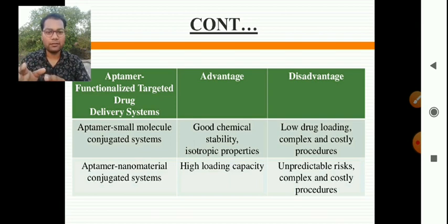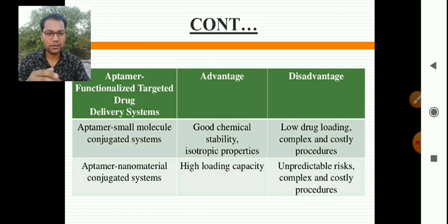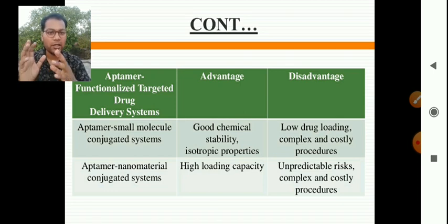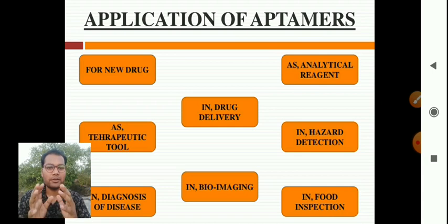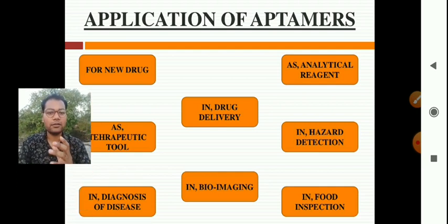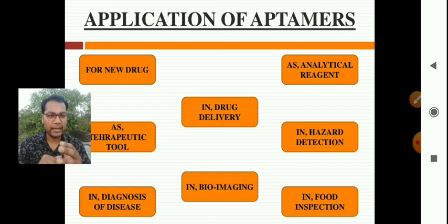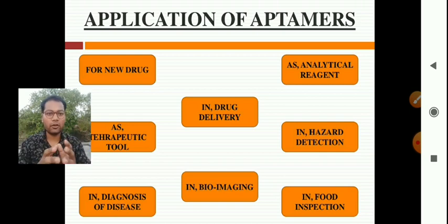For aptamer functionalized targeted drug delivery systems: the aptamer small-molecule conjugated system has the advantage of good chemical stability and isotropic properties, but the disadvantage is low drug loading and a complex and costly procedure. The aptamer nanomaterials conjugated system has the advantage of high loading capacity, with the disadvantage of unpredictable risk and complex and costly procedures. Applications of aptamers include use as a therapeutic tool, in diagnosis, drug delivery and targeting systems, bio-imaging, as an analytic reagent, in hazard detection, and in food inspection.